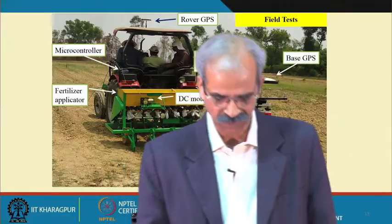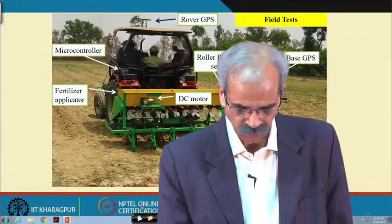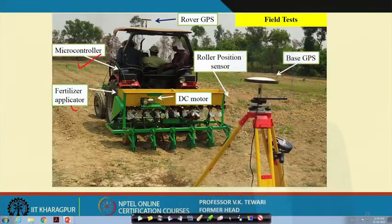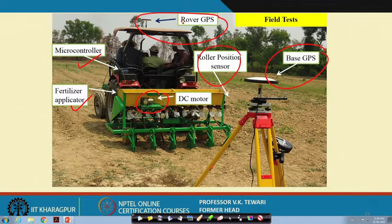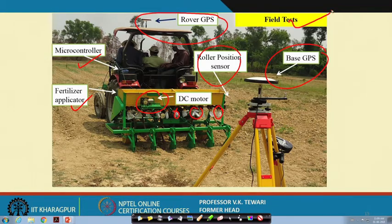We have done field testing of this system. The microcontroller is here, the fertilizer applicator is here, the DC motor is at this location, and there is a roller position sensor. The base GPS is here and the rover GPS is in this place. We have operated this in the field and measured results — we placed polythene to measure the amount of fertilizer falling when the system is working. This is one innovation done at IIT Kharagpur, comparable to systems anywhere in the world, and it is working.